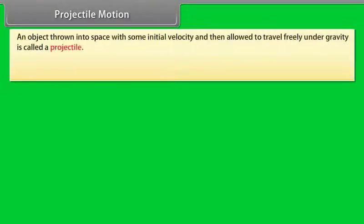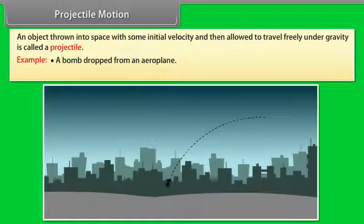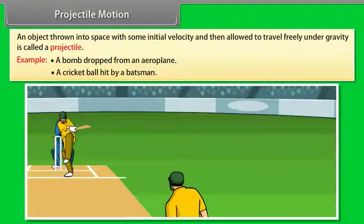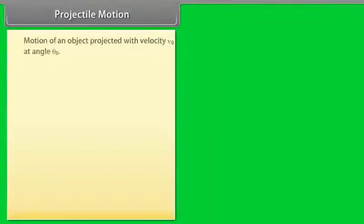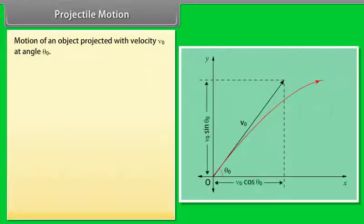Projectile motion. An object thrown into space with some initial velocity and then allowed to travel freely under gravity is called a projectile. For example, a bomb dropped from an aeroplane, a cricket ball hit by a batsman.